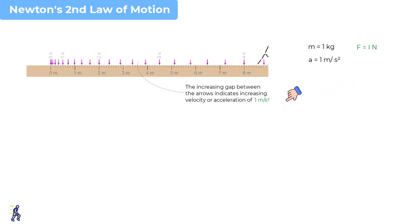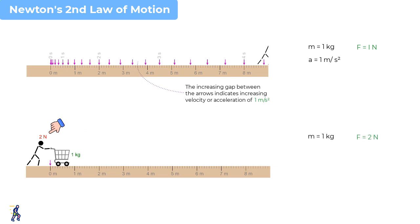Now, if we double the force to 2 Newtons, intuitively we expect the body to accelerate by 2 meters per second squared. And that's exactly what happens.